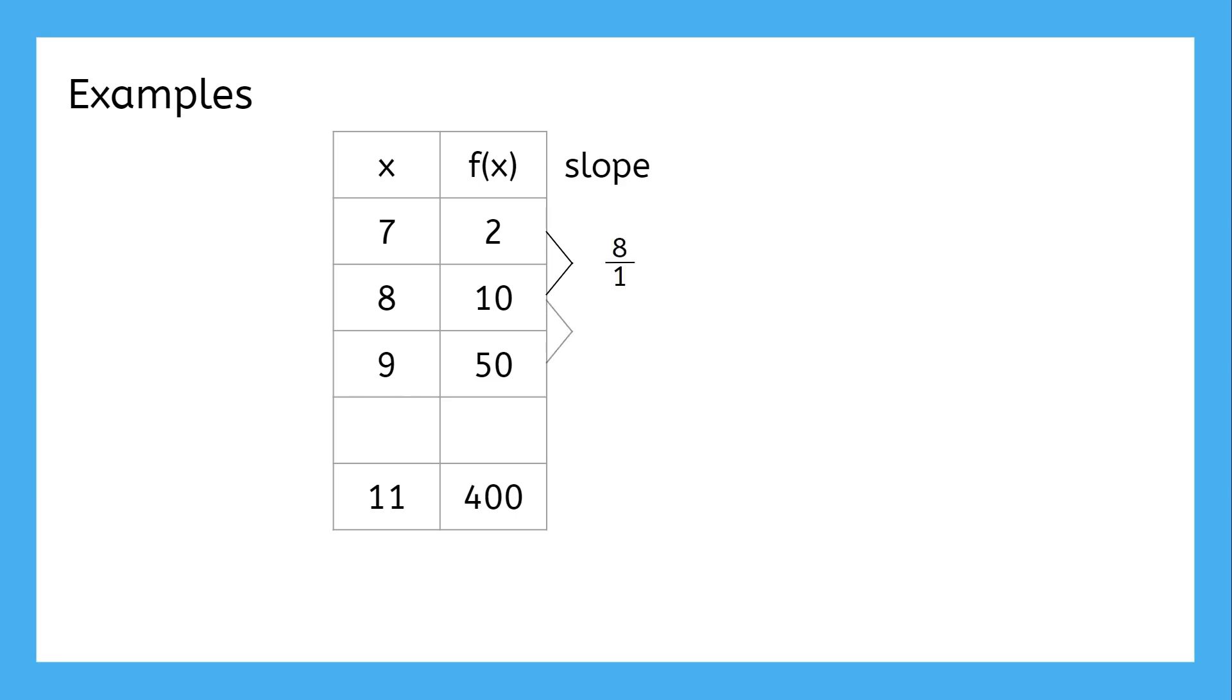Let's do another one, and this time there's some data missing. First, we check for a constant slope. Between the first two points, the slope is 8. Between 8, 10 and 9, 50, the slope is 40. It's pretty clear this isn't going to be linear, so let's check for a common ratio.